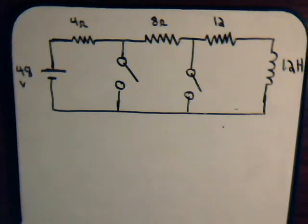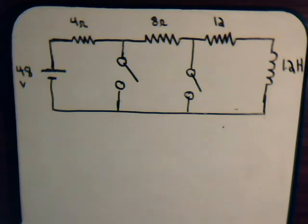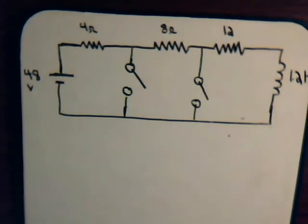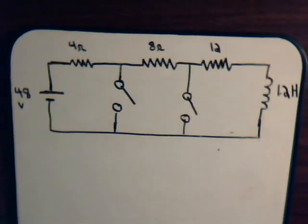This is video 60 in our series, Topics in Electrical Circuit Analysis. In this video, we're going to consider the same circuit as we did in the previous video, number 59, but let's give you a slightly more complicated version. What we have is, again, a relatively simple circuit.